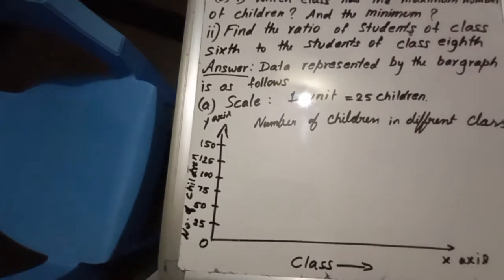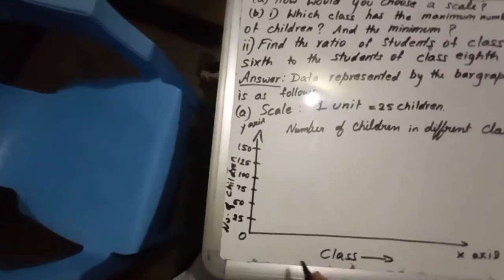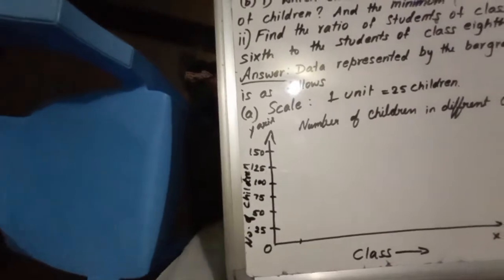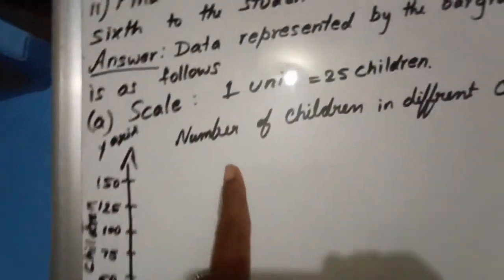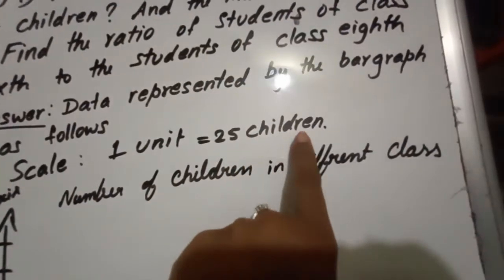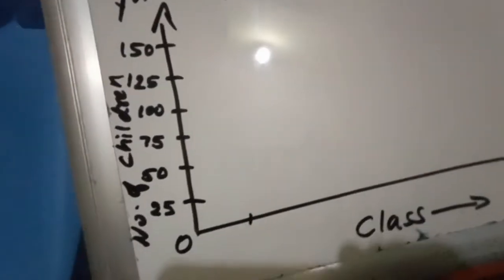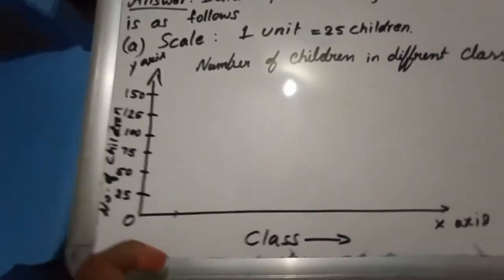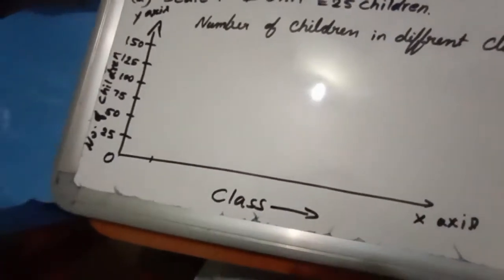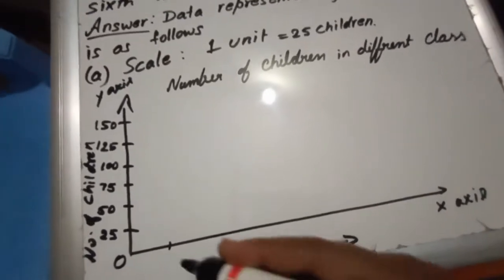The main thing is now we have to show here 5th, 6th, 7th, 8th, 9th, 10th. First we have to begin from 5th only. And here we have chosen the scale: 1 unit is equal to 25 children. Why I have chosen? According to my space, according to the data I have chosen.